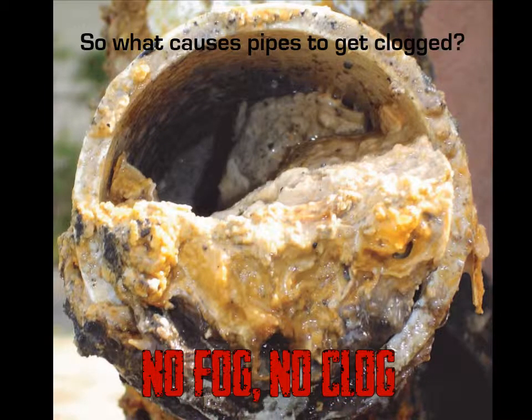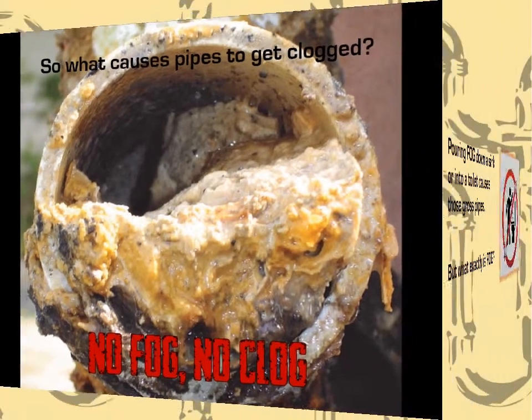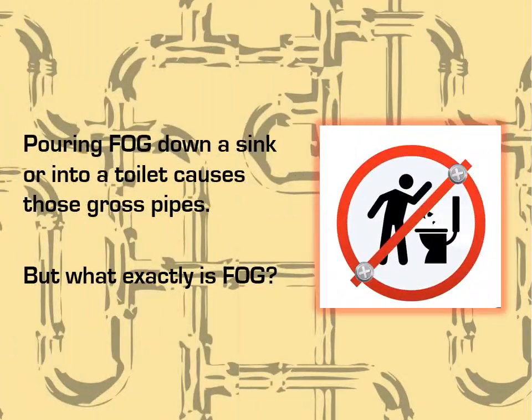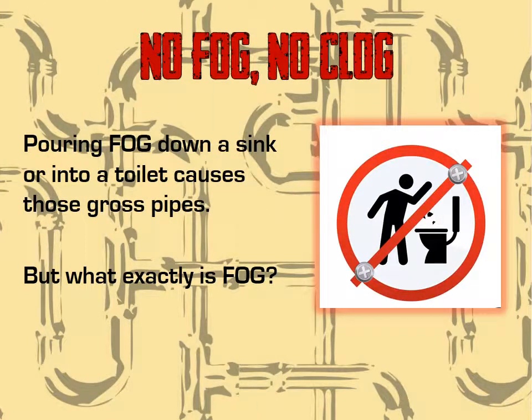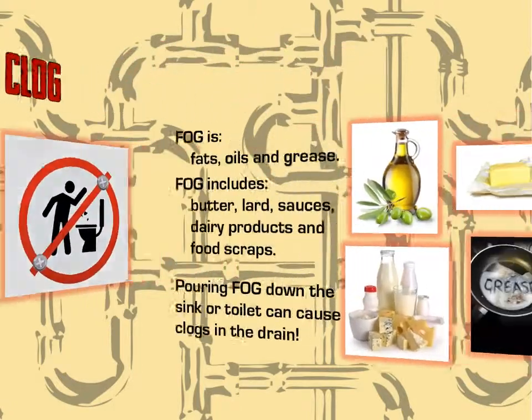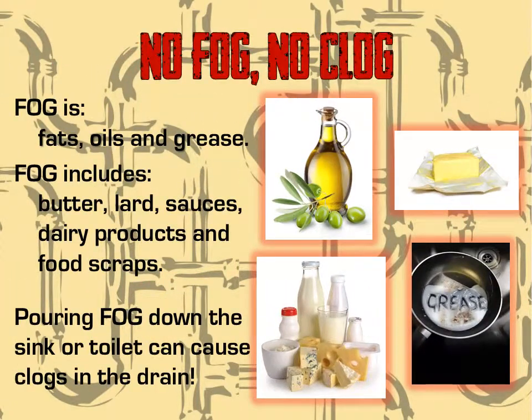So what causes pipes to get clogged? Pouring FOG down a sink or into a toilet causes those gross pipes. But what exactly is FOG? FOG is fats, oils, and grease. FOG includes butter, lard, sauces, dairy products, and food scraps. Pouring FOG down the sink or toilet can cause clogs in the drain.